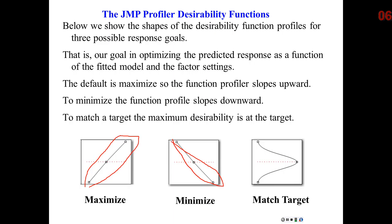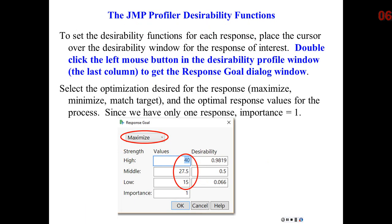Minimization, a lower response is most desirable. And then finally, one that's often very important in engineering and science, match a target. So here we give a target for the response, and the closer we can get to the target by manipulating the settings of our factors, the more desirable.